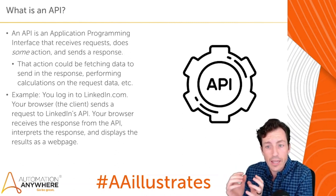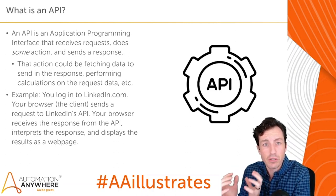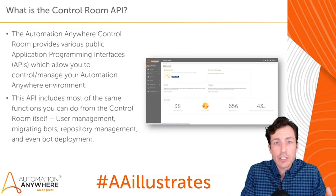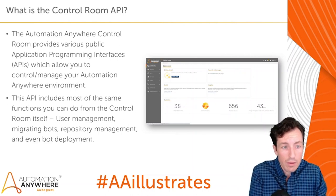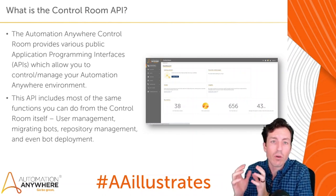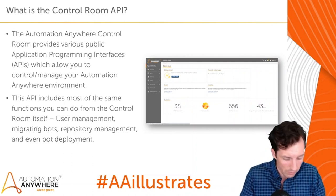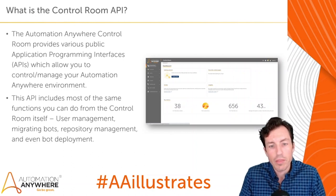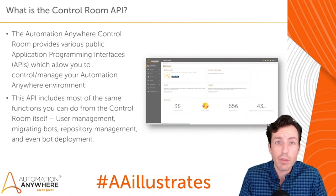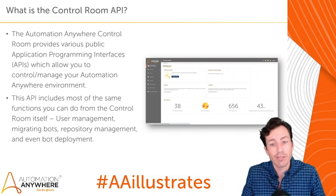The other side we're talking about specifically today is the Control Room API. The Control Room API is a series of endpoints available to you as a developer to consume on your own Control Room. The Automation Anywhere Control Room provides several public API endpoints which allow you to control, manage, update, and download from your Automation Anywhere environment — including user management, creating and reviewing credentials, updating attributes, and even deploying bots.